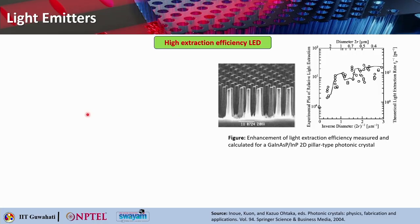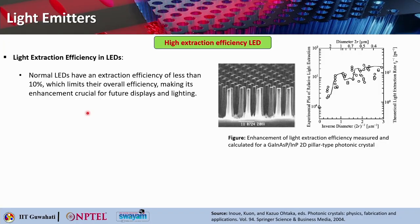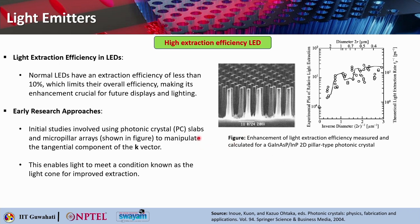Next: how do you use photonic crystals to improve the extraction efficiency from light emitting diodes? Normal LEDs have very little light extraction efficiency, typically less than 10 percent, which limits their overall efficiency, making this enhancement very critical for future displays and lighting. By using 2D photonic crystals, you can actually enhance the light extraction from LEDs multiple times. This shows the enhancement of light extraction efficiency, both calculated (solid line) and measured (dots) for gallium indium arsenide phosphide and indium phosphide. These are the 2D pillar photonic crystal type.